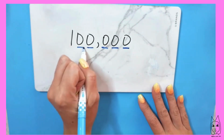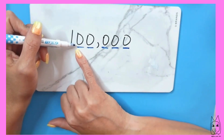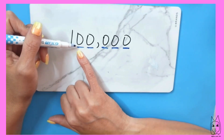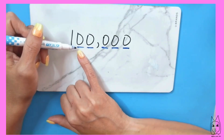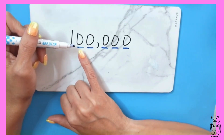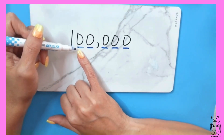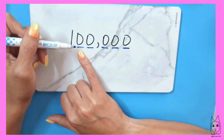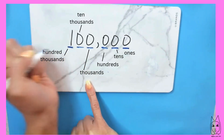So this is the 10,000s place. Any digit in this place value represents that digit times 10,000. Zero would be zero times 10,000. Then you have 1 times 10,000, so that would be 10,000, then 20,000, 30,000, 40,000, 50,000, 60,000, 70,000, 80,000, 90,000. And when you got to 99,999, that takes you to 100,000.